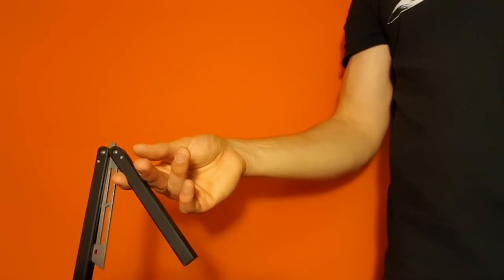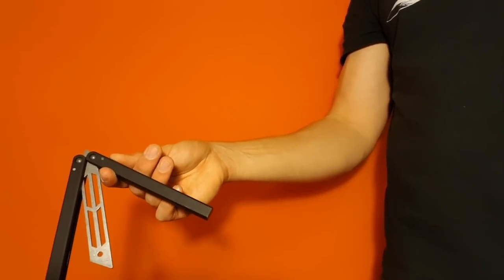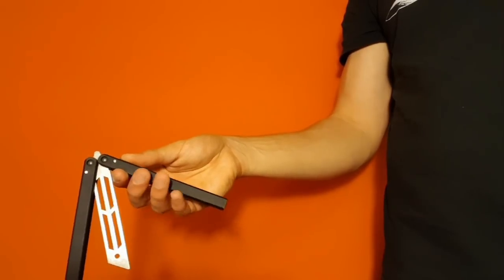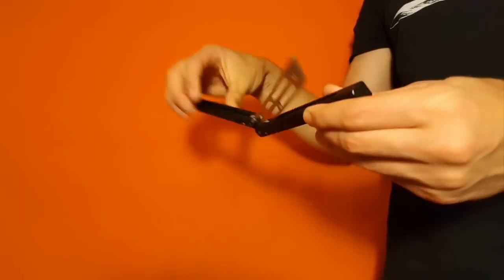At this point you can take your thumb, place it on the back of the safe handle, pinch, remove your bottom four fingers and flip up. So I'll go over that one more time here real quick.